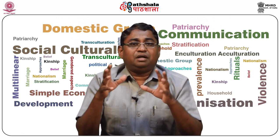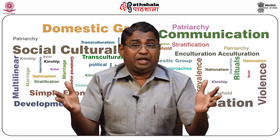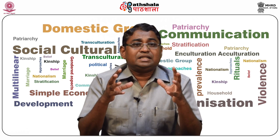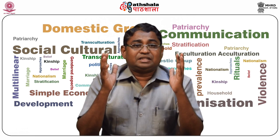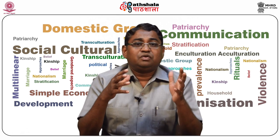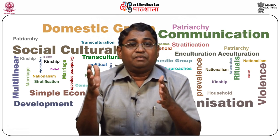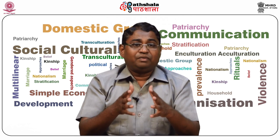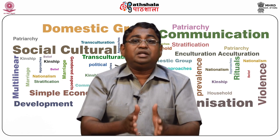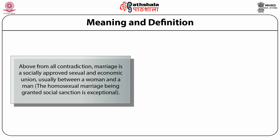Today, marriage and family are universal — they exist among all kinds of societies. Similarly, all societies have a parent-child social group, although the form and size of family may vary. At the same time, marriage is not always the basis for family life. One-parent families are becoming increasingly common in developed societies, where more individuals are now choosing to have children without being married. Above all contradictions, marriage is a socially approved sexual and economic union, usually between a woman and a man.